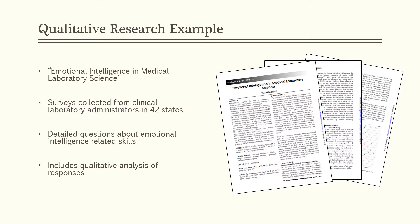Here is an example of a qualitative research article from the Clinical Laboratory Science Journal, available online through the ASCLS website. The article is titled "Emotional Intelligence in Medical Laboratory Science." Data was collected from surveys with detailed questions about emotional intelligence and related skills, gathered from clinical lab administrators in 42 different states. The article includes a qualitative analysis of all survey responses in the discussion and results sections, making it a good example of a qualitative research article.